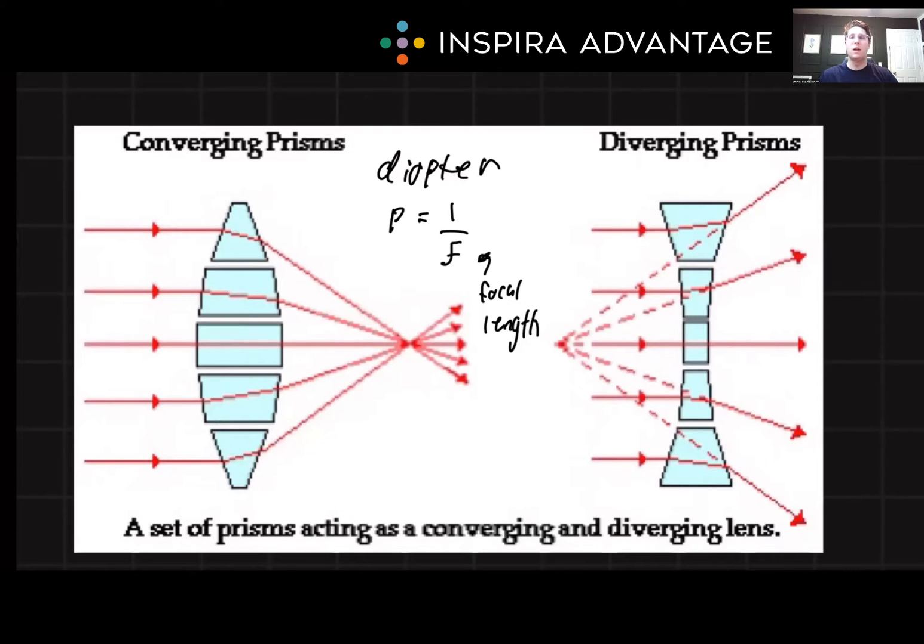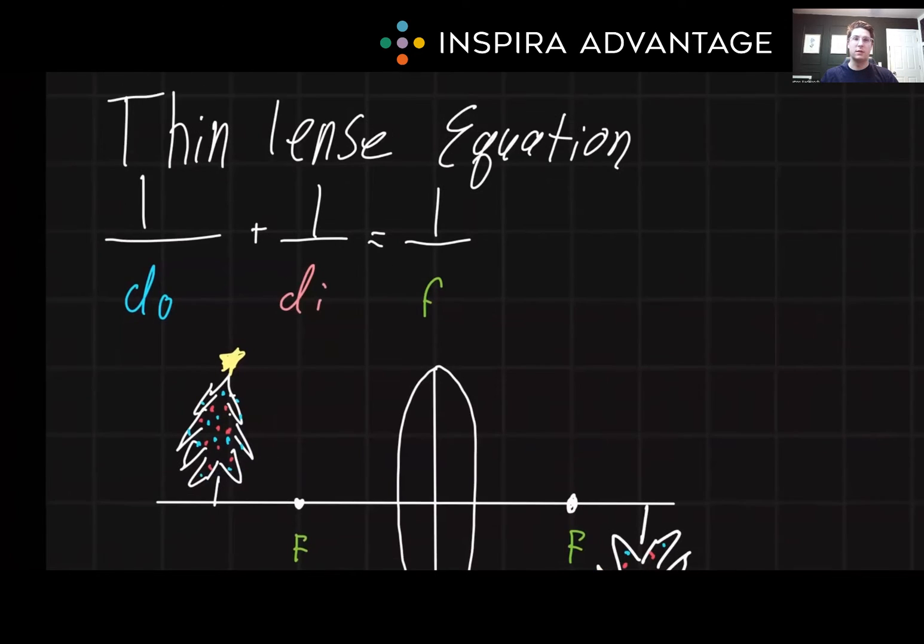Diverging lenses are like concave lenses. They're going to spread light rays outward. They're used to correct nearsightedness. The behavior of light rays as they pass through these lenses is crucial for understanding how images are formed. But don't worry, we're going to do some practice to make sure that this is all making sense.